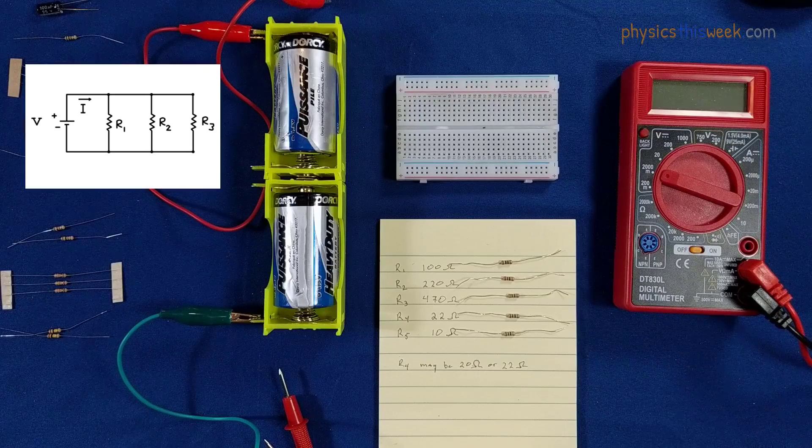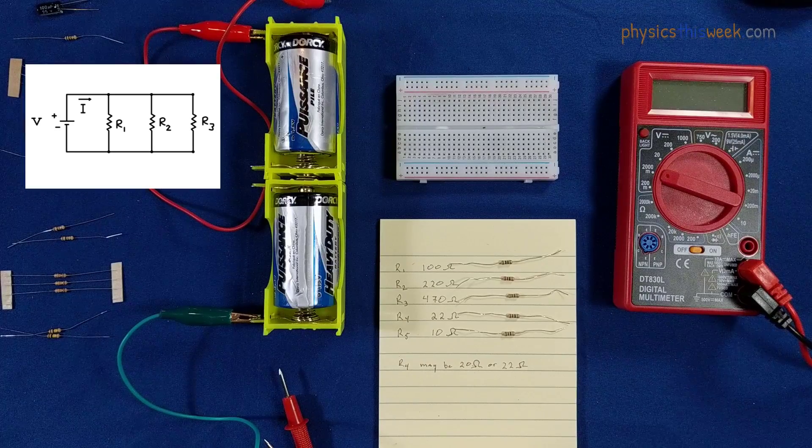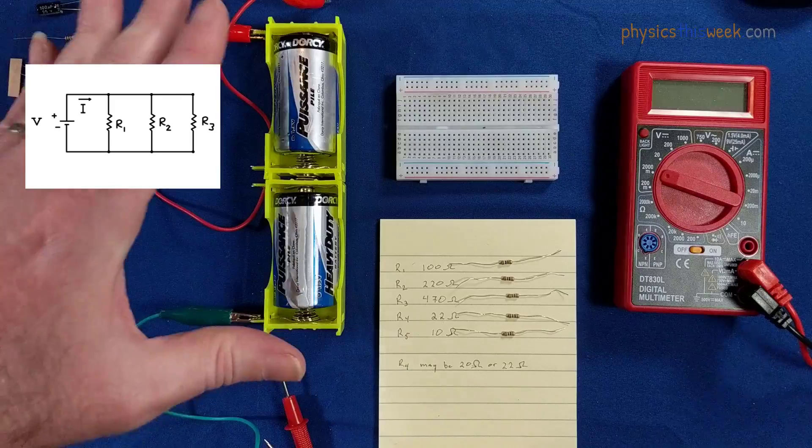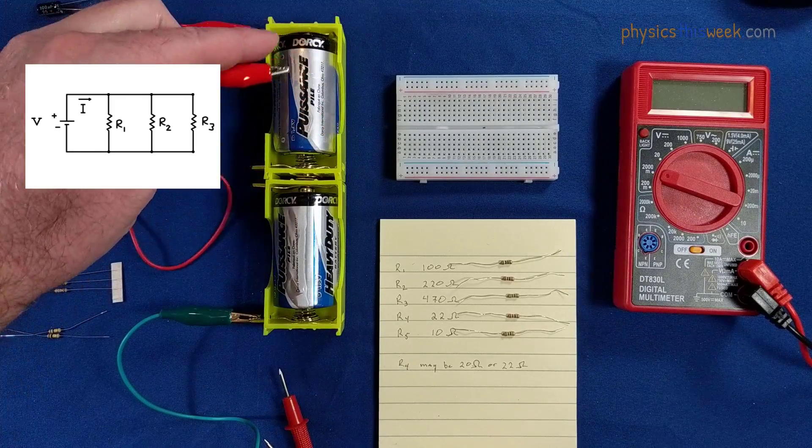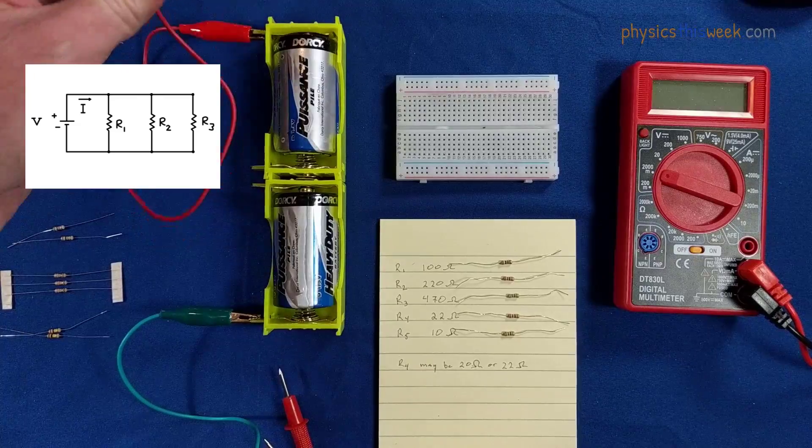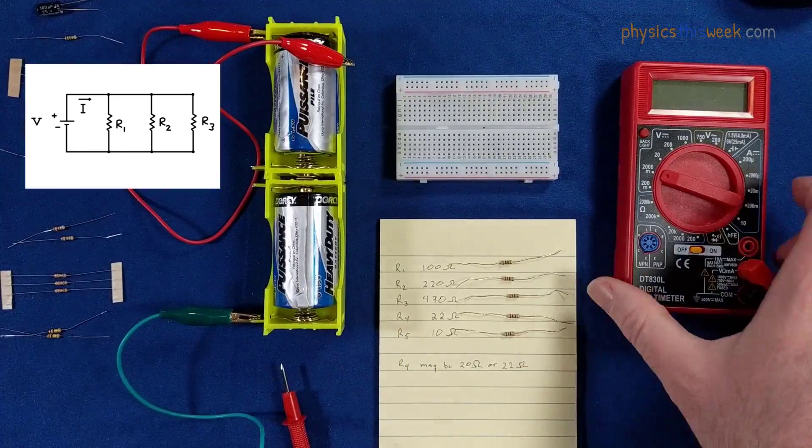We're ready now to look at the parallel circuit. Notice here with my battery I've changed things around a little bit. The red side is now positive, which fits more with the convention that the red side is positive, which we do with the voltmeter or multimeter.